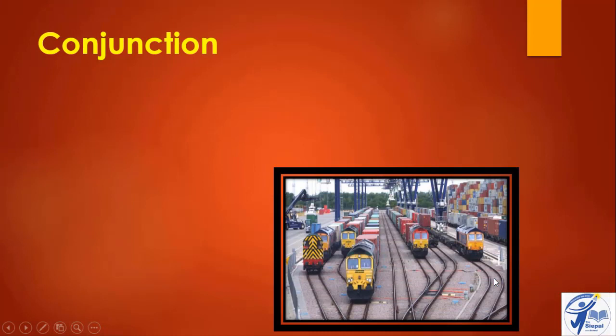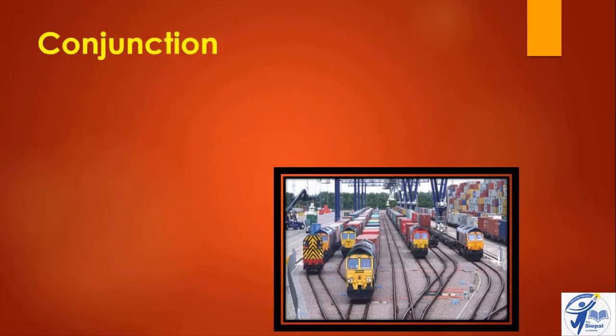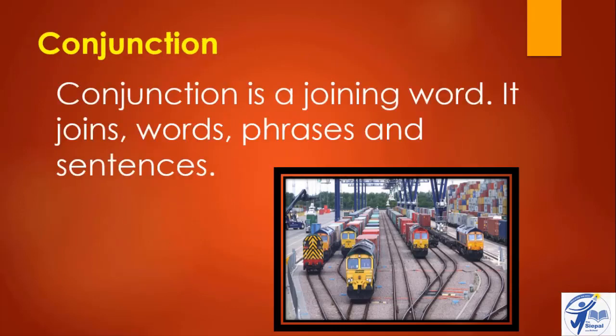This word 'and' is a conjunction. If you look at the picture here, you can see that there are many railway tracks which are joined together into one track. When we find the same joining points, we call it a junction. So this is a conjunction — it is a part of speech because it is a joining word. It joins words and phrases to make sentences.